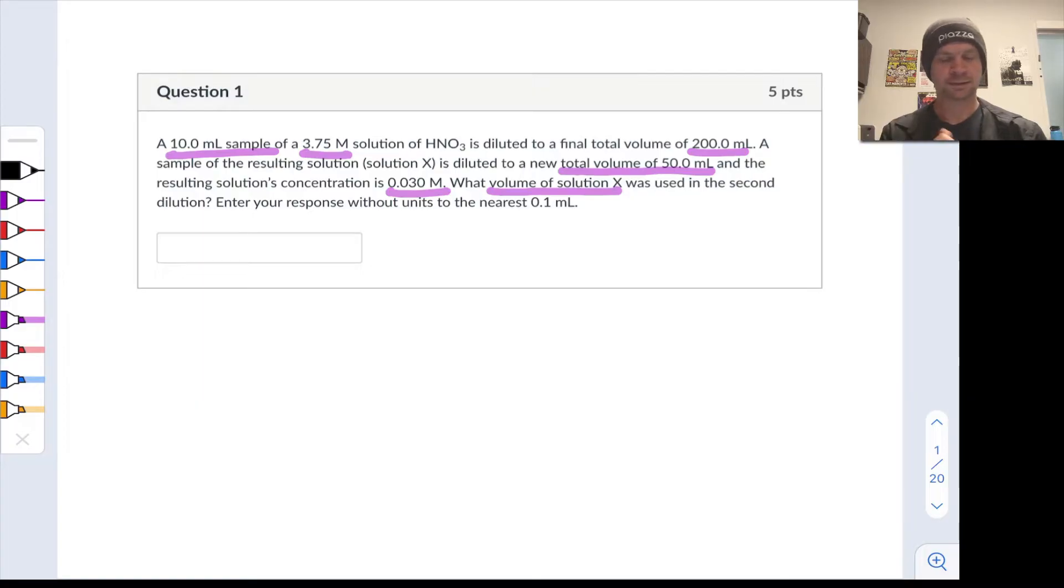Like a lot of these types of problems, I think it helps a great deal here to draw a picture. So we started with a solution of nitric acid in a beaker here and I'll represent the solute molecules using dots like this, let's do four dots since this is comparable to four moles per liter.